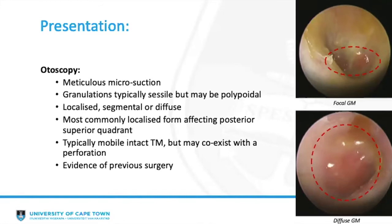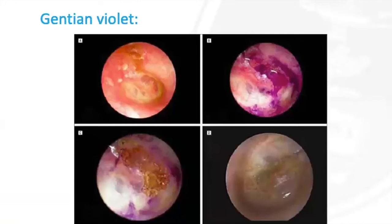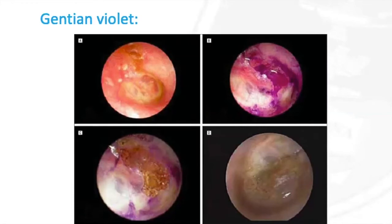As it may occur as a complication of previous otological intervention, it is important to look for features of previous surgery. The application of gentian violet is a useful trick — it adheres only to areas of epithelial defect, leaving intact tympanic membrane unstained, allowing one to delineate the uninvolved epithelium and assess the extent of involvement, which is helpful in directing and assessing response to therapies.